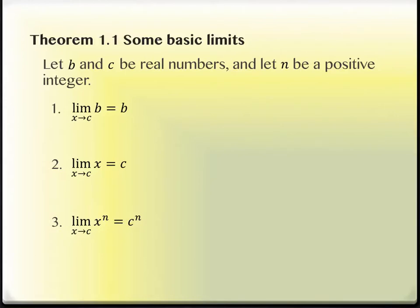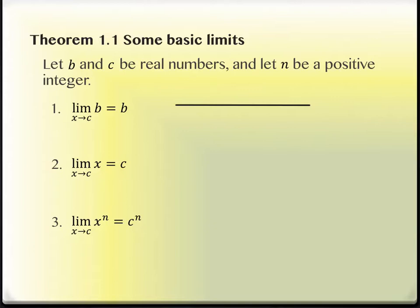Let's look at some basic properties of limits first. If B and C are real numbers and N is a positive integer, then the limit of a constant B is just B. If you think about this graphically, the line Y equals B is just a horizontal line at level B, and the limit is going to be the same Y value everywhere along that horizontal line.